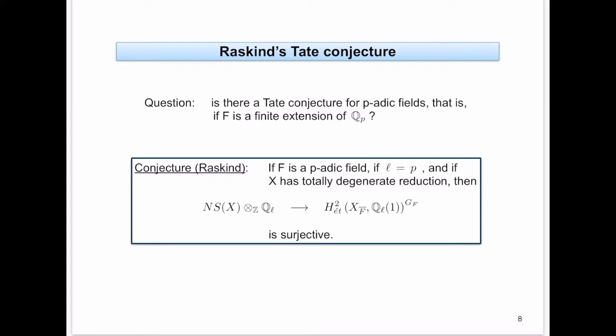There are two main things to observe: the assumption that X has totally degenerate reduction, and the fact that we look at L equal to P. Usually one looks at L different from P. Why L equals P? If L were different from P and we had good reduction, then by base change theorems, the Galois invariants — since inertia acts trivially — reduce to Galois invariants of the absolute Galois group of the residue field, computing invariants of the special fiber, not the generic fiber.